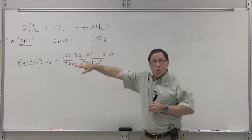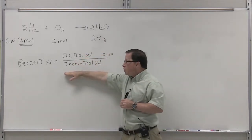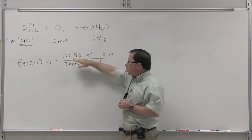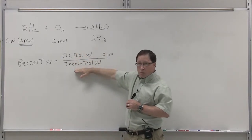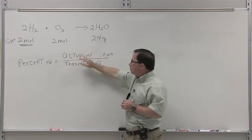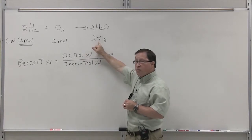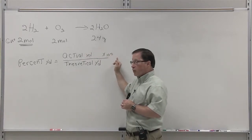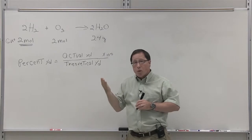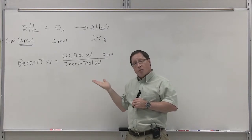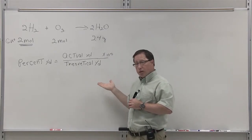What we would do in order to determine our percent yield would be to determine our theoretical yield, divide that into 24 and multiply by 100. In order to determine theoretical yield, we have to know what the limiting reagent is.